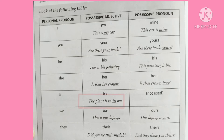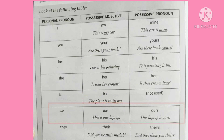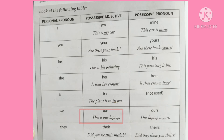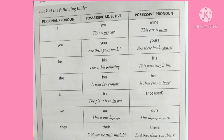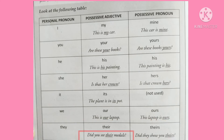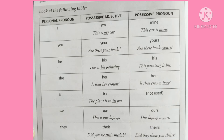Example for 'it': 'The plant is in its pot.' For personal pronoun 'we,' the possessive adjective is 'our' and possessive pronoun is 'ours': 'This is our laptop' / 'This laptop is ours.' For 'they,' the possessive adjective is 'their' and possessive pronoun is 'theirs': 'Did you see their medals?' / 'Did they show you theirs?' Now you should be able to differentiate between possessive adjectives and possessive pronouns.